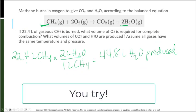And the last one, starting with 22.4 liters of CH4, it's a 1 to 2 ratio to get to water. So I'd have 44.8 liters of water produced.